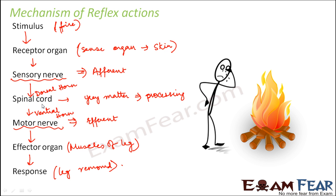However, the brain is kept informed — the brain knows. How is the brain kept informed about what the spinal cord has done? Because the spinal cord is always in direct communication with the brain. The spinal cord is connected to the brain directly through the medulla oblongata, so the spinal cord itself sends all the information to the brain and keeps it informed about everything.